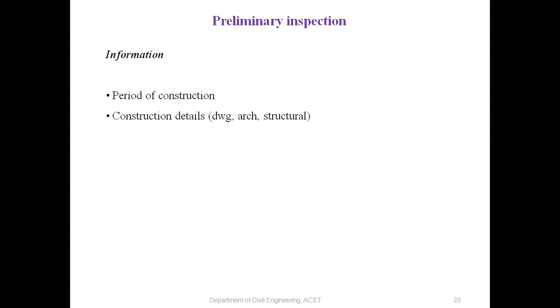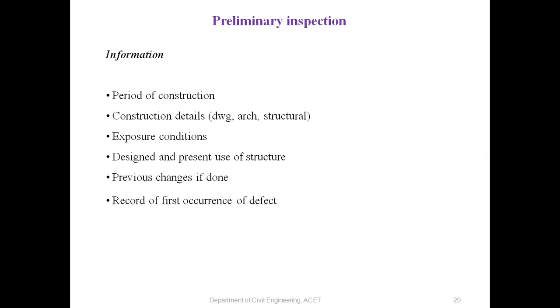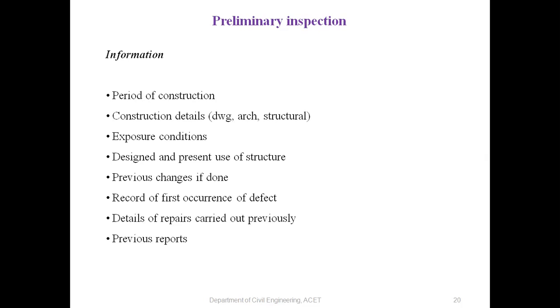We also need different types of loading and loading structures — columns and all elements. Exposure conditions, designed and present use of the structure, previous changes if done, record of past occurrences or defects, details of repair carried out previously, previous reports, details from owners, and photographs — all this information is required. This is known as your preliminary inspection.